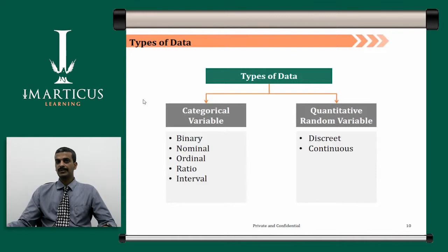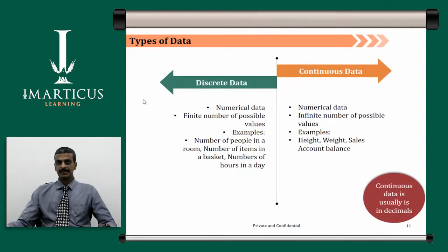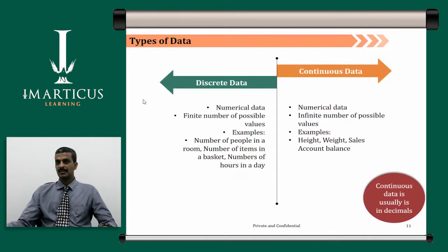We have quantitative random variables which can be classified as discrete or continuous. When I say discrete data, this is numerical data which has a finite number of possible values. Examples include number of people in a room, number of items in a basket, number of hours in a day — all representing numerical data that is discrete in nature. Then we have continuous data, which is again numerical but has an infinite number of possible values. For example, height of people, weight of people, sales made in an organization, or account balance. All this data is numerical but continuous in nature.